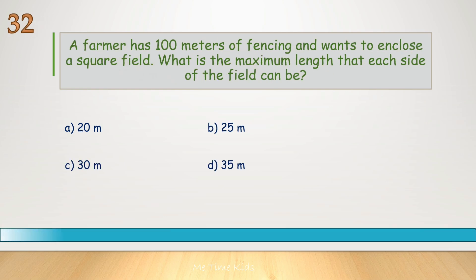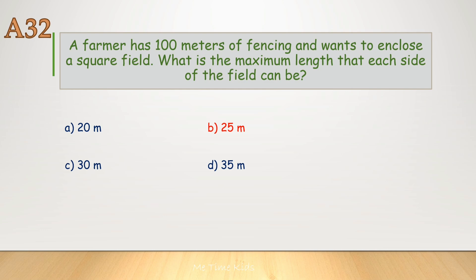A farmer has 100 meters of fencing and wants to enclose a square field. What is the maximum length that each side of the field can be? Correct answer is B, 25 meters.